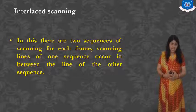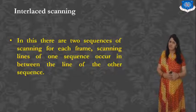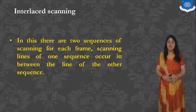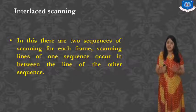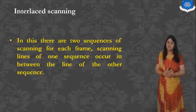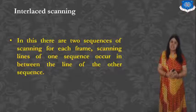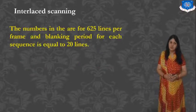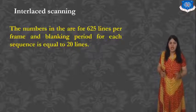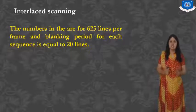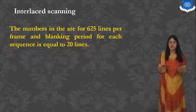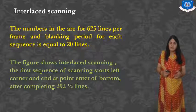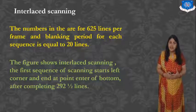Progressive Scanning takes too much time to read all the data. To reduce the time, another procedure called Interlaced Scanning is used. In Interlaced Scanning, there are two sequences of scanning for each frame, and the scanning lines of one sequence occur in between the lines of the other sequence. The number of lines in interlaced scanning is 625 per frame, and the blanking period for each sequence is 20 lines.